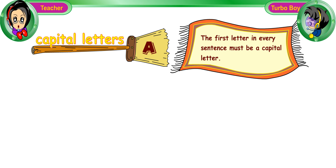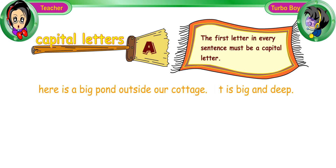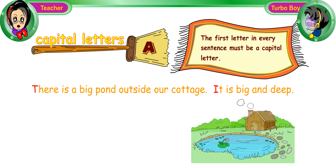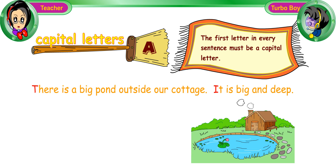Firstly, when we write a sentence, the first letter of the first word must be a capital letter. Look at this example: 'There is a big pond outside our cottage. It is big and deep.' There and It are the first words of the sentences, so we must write T and I in capital letters.